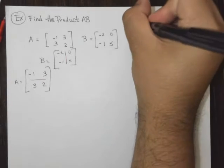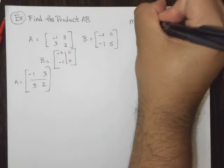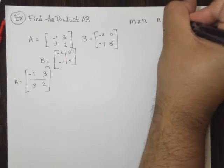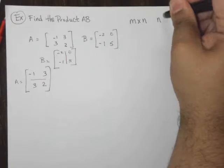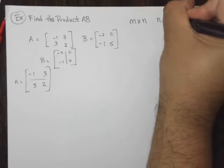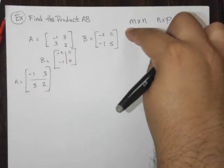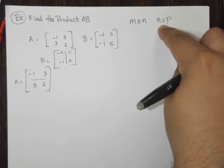So suppose we had two matrices of size M by N and N by P. Not N equals. So N by P. Okay, these are the sizes, the number of rows, the number of columns, the number of rows, the number of columns.